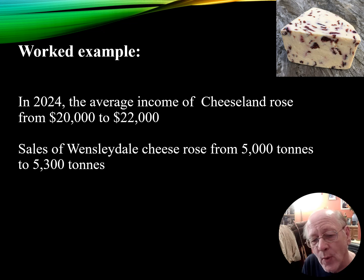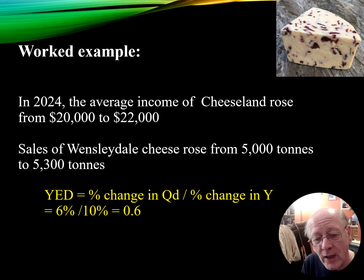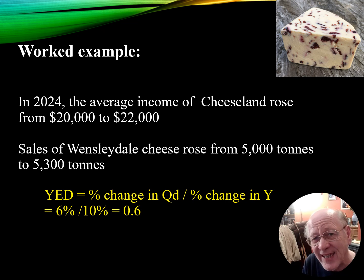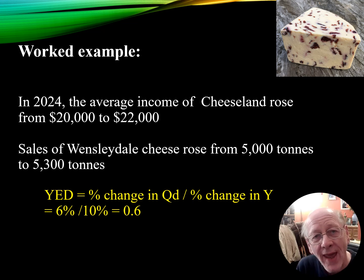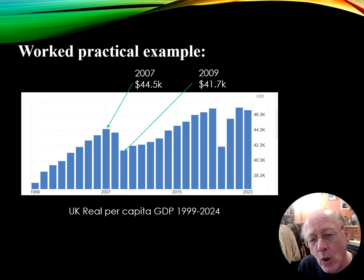Here's a worked example. In the land of Cheeseland, average incomes rose from $20,000 to $22,000, and sales of Wensleydale cheese rose from 5,000 tons to 5,300 tons. Using the formula, the change in quantity demanded is a 6% rise and the change in income is a 10% rise. So 6 divided by 10 gives us 0.6 — positive, making it a normal good, but not more than one, so it is not superior.